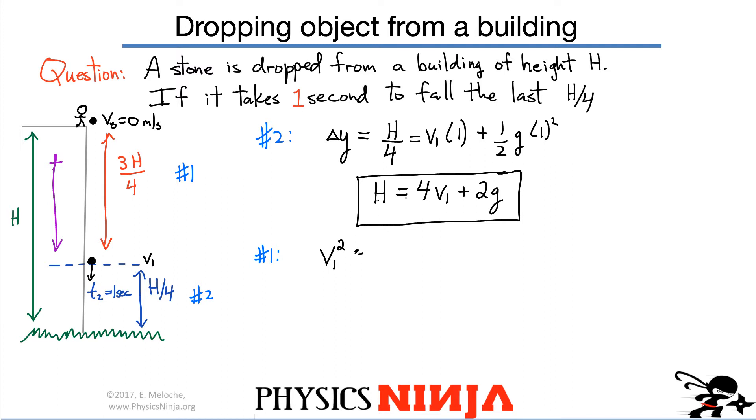The V1 squared is the final velocity at the end of this displacement. It's equal to the initial velocity, which in this case is zero, plus two times the acceleration multiplied by the displacement, 3H over 4. And this form is going to be a little bit better, at least the way I've started to solve the problem, because it automatically links H and V1 again.